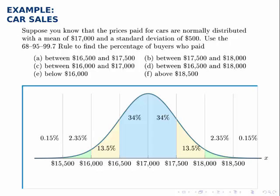Part E asks what percentage paid below $16,000. So that's right here, and below $16,000 we have two blocks to take care of, 2.35% and 0.15%. Adding them together, we get 2.5%. So 2.5% of buyers paid less than $16,000 for their car.